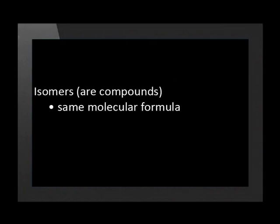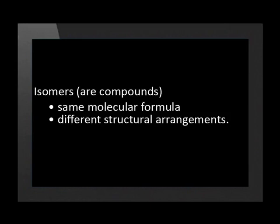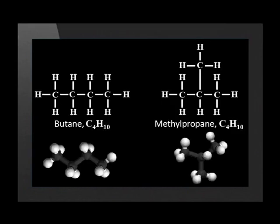Isomers are compounds with the same molecular formulae but different structural arrangements. Here is another example of two isomers: butane and methylpropane. Can you see that the molecular formulae is the same, but the structural arrangement of the atoms is different?